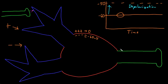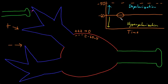Depolarizations are also called excitatory potentials because they move the membrane potential closer to the threshold, increasing the likelihood that an action potential will be started at the trigger zone. A graded potential that moves the membrane potential to a more negative number, farther away from zero, is called a hyperpolarization, because it increases the polarization or the charge separation of the membrane. Hyperpolarizations are also called inhibitory potentials because they decrease the likelihood that an action potential will be started at the trigger zone.